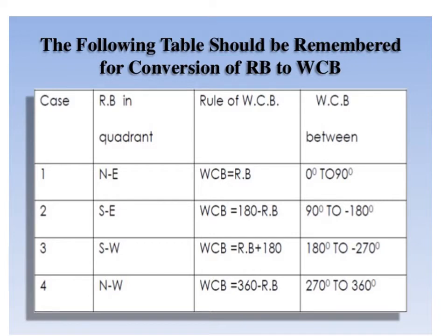Case 4: for a line in the north-west quadrant, WCB is equal to 360 minus reduced bearing, and the value of WCB lies between 270 to 360 degrees.